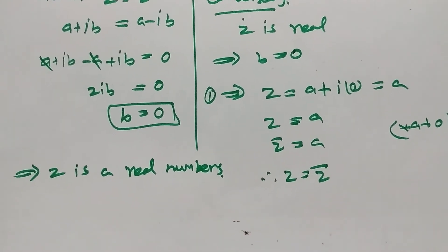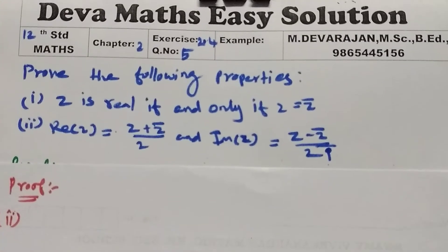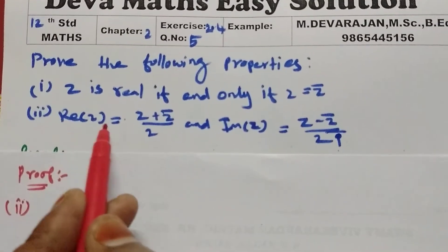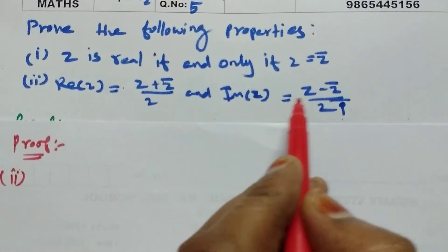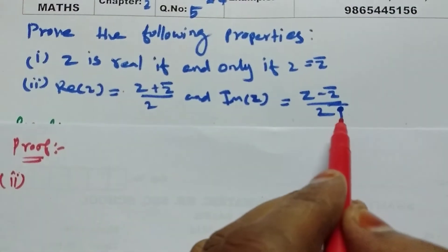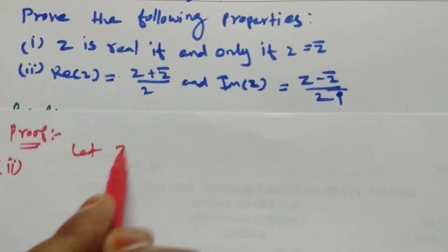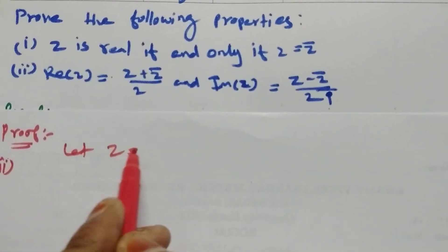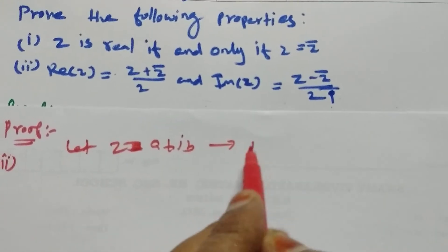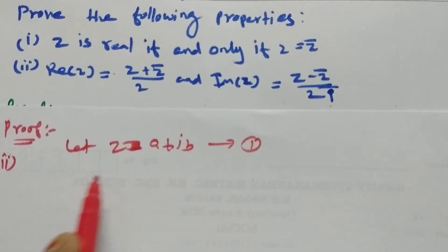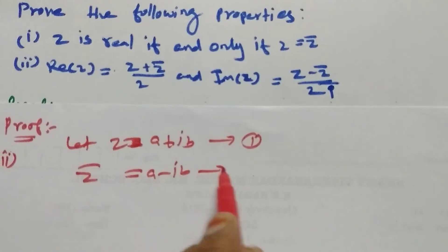This is the second condition. Second proof: the real part of z equals (z plus z-bar) divided by 2, and the imaginary part of z equals (z minus z-bar) divided by 2i. Let z equals a plus ib, then z-bar equals a minus ib.